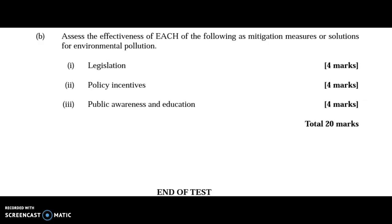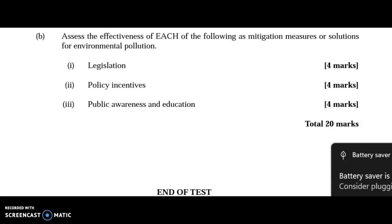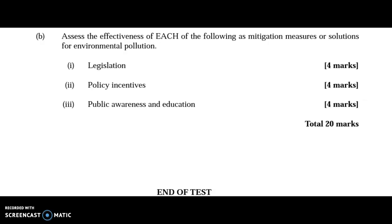For part b, discussing the effectiveness of each form of legislation: laws, when properly enforced with hefty penalties and fines, can deter pollution. Policy incentives — such as cashback and tax break incentives — reward persons monetarily for environmentally sound behavior, such as returning recyclables. Public awareness and education can foster a more environmentally conscious culture applicable to both young and old, reducing individual per capita waste. That concludes the session — any questions are welcome.